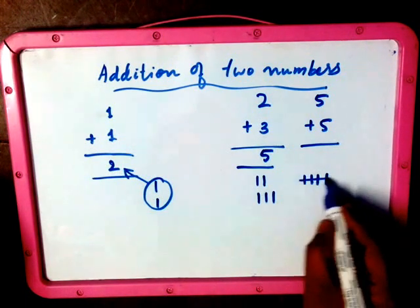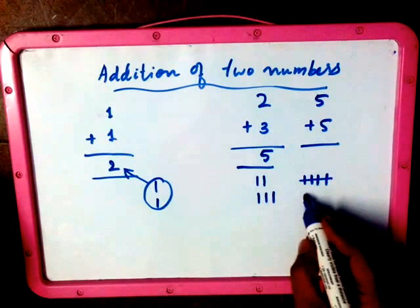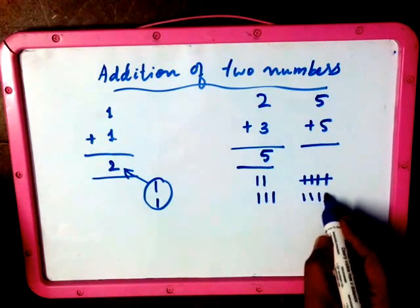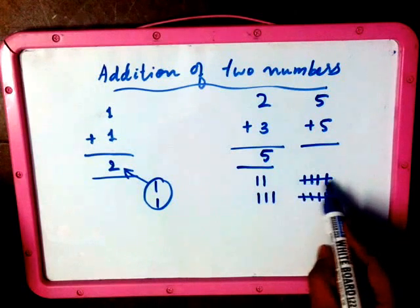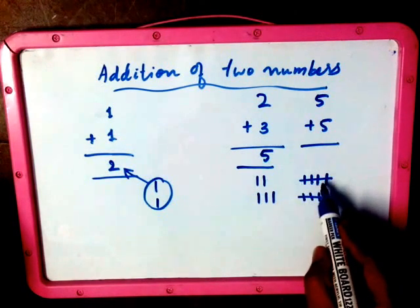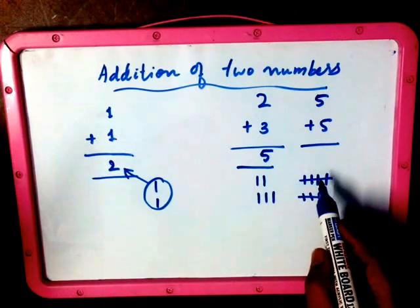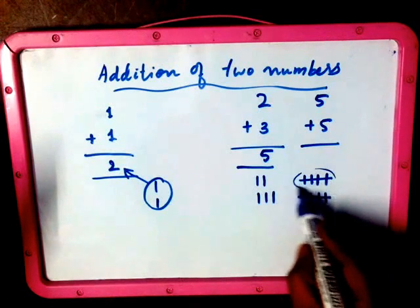Then another one, two, three, four. So if you strike the line, that is the fifth count, then it is easily denoted that this total number is five. Just by looking, we can identify this is five.